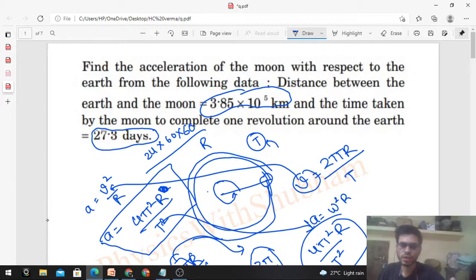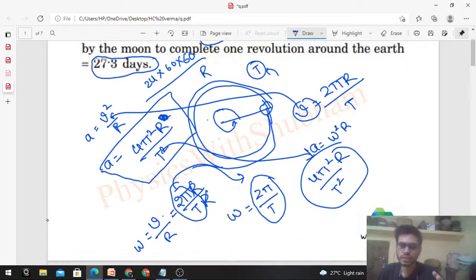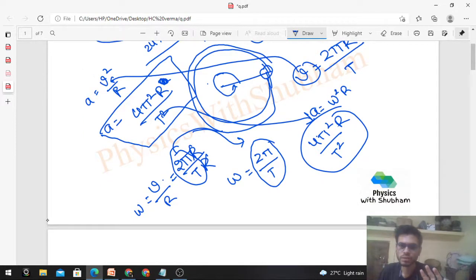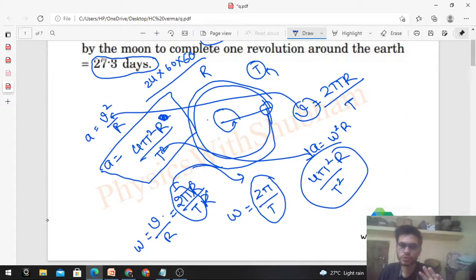If we talk about direction, the velocity's direction changes because it's a circular motion. The acceleration's direction is directly towards the center, in the radial direction. Angular velocity omega's direction does not change.